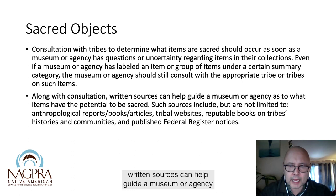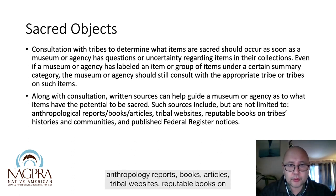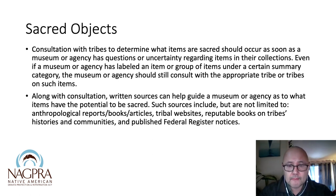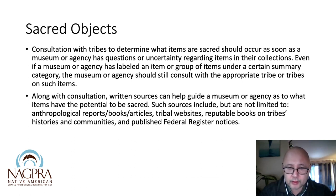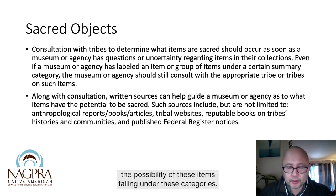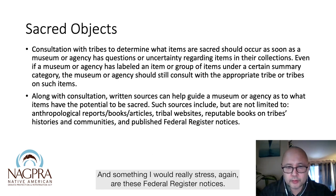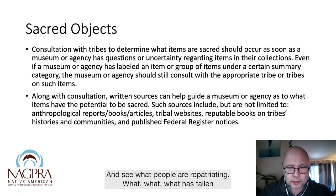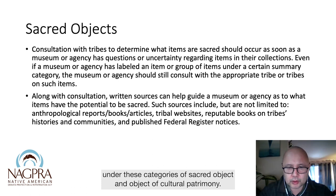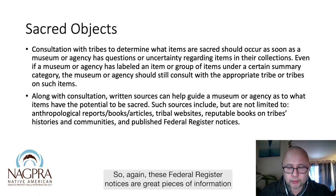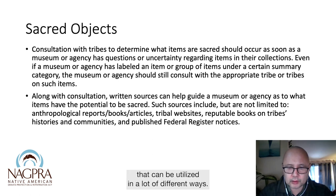Along with consultation, written sources can help guide a museum or agency as to what items have the potential to be sacred. These sources include anthropology reports, books, articles, tribal websites, reputable books on tribes' history and communities, and published Federal Register notices. If you don't have a team of tribal consultants yet, you can still do your own homework and start to piece together the possibility of these items falling under these categories. Federal Register notices are great pieces of information — see what people are repatriating, what is falling under these categories of sacred object and object of cultural patrimony.